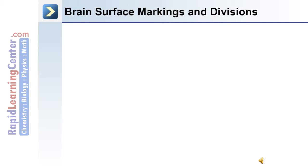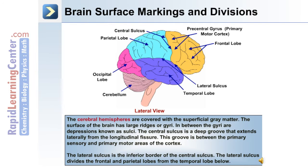Regarding the brain's surface markings and divisions: the central sulcus separates the frontal lobe from the parietal lobe, and the lateral sulcus separates the parietal lobe from the temporal lobe. The cerebral hemispheres are covered with superficial gray matter. The surface of the brain has large ridges or gyri, and in between the gyri are depressions known as sulci. The groove between the primary sensory and primary motor areas of the cortex is the central sulcus.